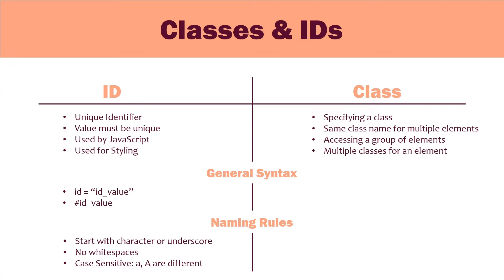The general syntax for class is: the class attribute, equals sign, and the value of the class or the class name. If you want to access the class, you need to put a dot sign followed by the class name. So the key difference is: ID starts from a number sign while class starts from a dot sign.